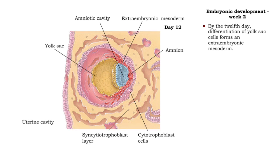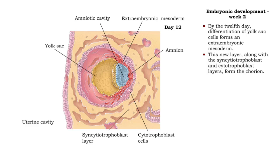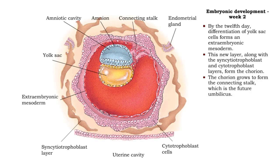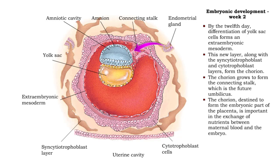By the twelfth day, differentiation of yolk sac cells forms an extraembryonic mesoderm. The migrating yolk sac cells, as well as the syncytiotrophoblast and cytotrophoblast layers, form the chorion. The chorion grows to surround the amnion and amniotic fluid, and forms the connecting stalk, which is the future umbilicus. The chorion, destined to form the embryonic part of the placenta, is important in the exchange of nutrients between maternal blood and the embryo.